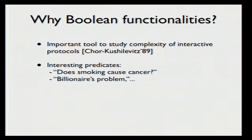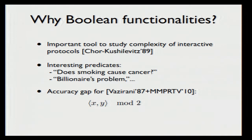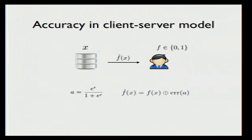Even for Boolean functionalities, we don't really understand how the accuracy gap behaves. The only Boolean functionality prior to this work for which we know there is an accuracy gap is the dot product modulo two, and it follows directly from the Hamming distance work of McGregor et al. from 2010. Let me quickly mention that if we go back to the client-server model, for Boolean functionalities we can achieve the optimal possible accuracy by simply perturbing the output with probability 1 minus a, where a is this bound. This is known as the generic differential privacy bound, and I'll use it later.